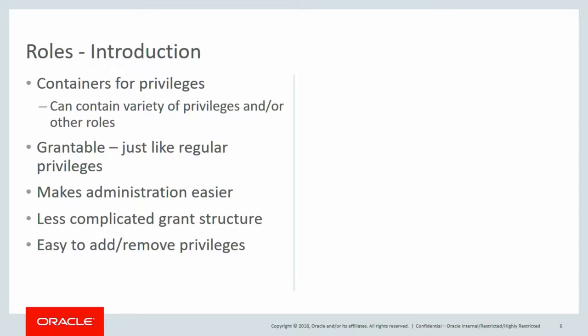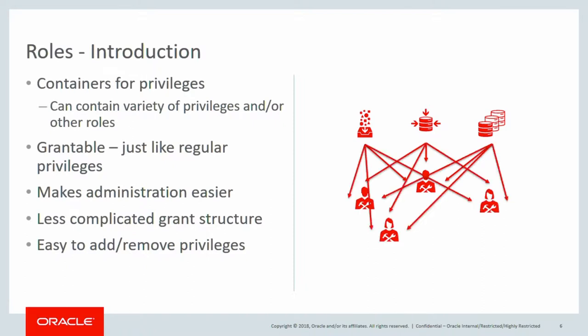Why roles? Why can't you directly grant privileges to users? Of course you can — you grant all those privileges to a user and that user can perform all those tasks. The problem begins when the number of users increases. With each added user who needs the same set of tasks, you have to repeatedly grant all the privileges again. If you have five users and three privileges, you have 15 grants in total. And if you want to add or remove one privilege, you have to repeat the task for each user.